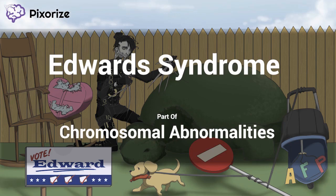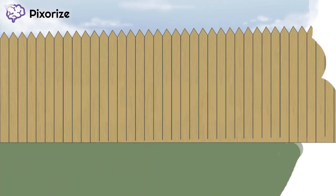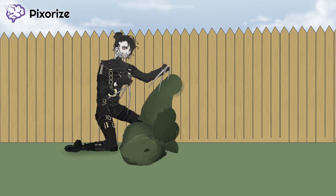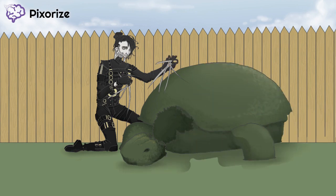Hello and welcome to Pixarize the Scene on Edward Syndrome, part of our playlist on the chromosomal abnormalities. Edward Scissorhands comes to mind — take a look at Edward here shaping this bush into a turtle. If you watched the movie, you would know that Edward uses scissorhands to shape plants into beautiful sculptures. Just remember Edward here and you'll quickly bring up this scene on Edward Syndrome.